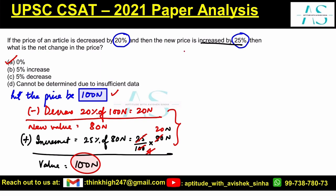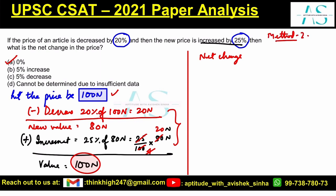That is the basic method. Now let's look at Method 2, the formula-based approach. This is a very important formula: net change = a + b + (ab/100), where a and b represent the two percentage changes.